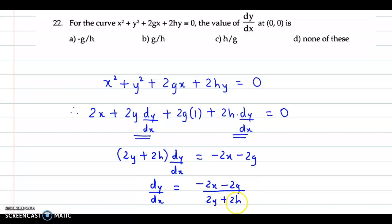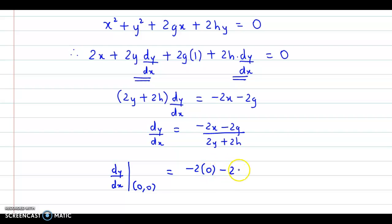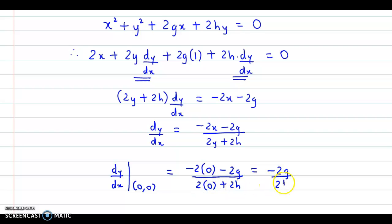We have to obtain dy by dx at (0, 0). So dy by dx at (0, 0): the value of x is 0, so we have minus 2 times 0 minus 2g divided by 2 times y, and y is again 0, plus 2h. This term is 0, so we have minus 2g in the numerator, and this term is 0, so we have 2h in the denominator.